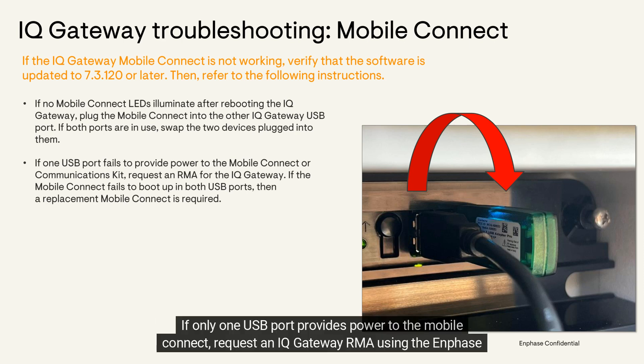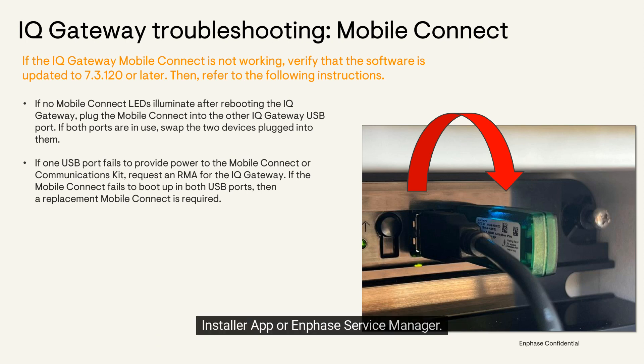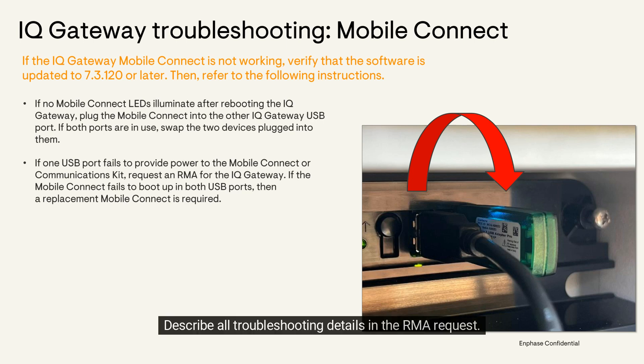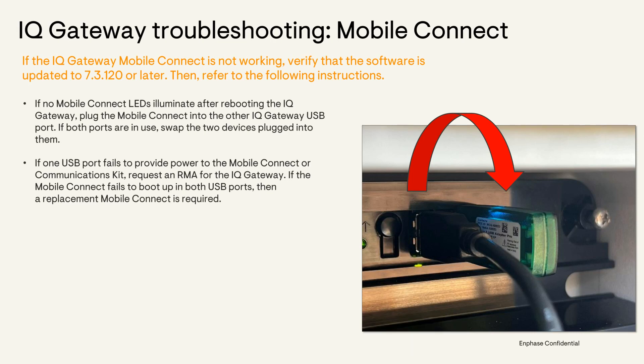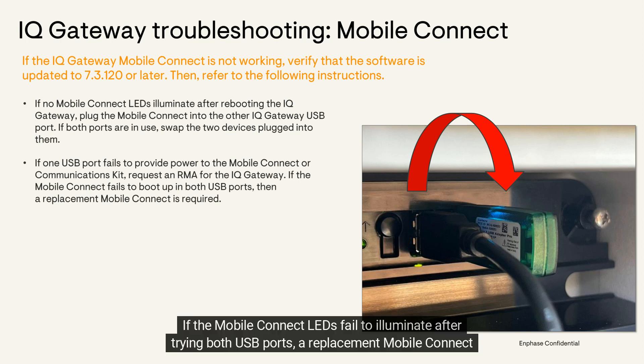If only one USB port provides power to the mobile connect, request an IQ Gateway RMA using the Enphase installer app or Enphase Service Manager. Describe all troubleshooting details in the RMA request. Take pictures of the mobile connect plugged into both USB ports with LEDs visible, and include these pictures in the RMA request.